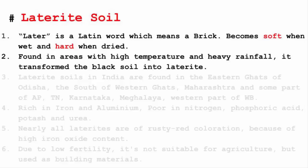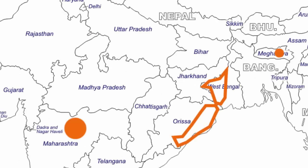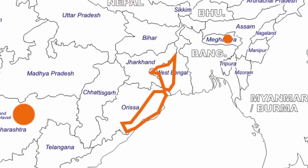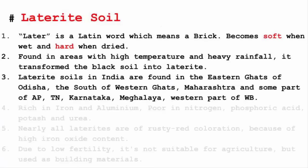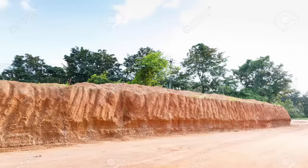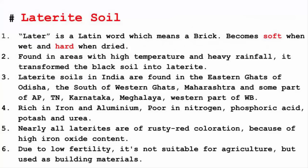By the process of leaching, black soil turns into laterite. Leaching here means loss of water. Laterite soil is mostly found in the eastern Ghats of Odisha, the south of the western Ghats, Maharashtra, some parts of Andhra Pradesh, Tamil Nadu, Karnataka, Meghalaya, and western parts of West Bengal. This soil is rich in iron and aluminium but poor in nitrogen, phosphoric acid, potash and urea. Since most of the good content is missing, it is very difficult to grow anything on it. It is not suitable for agriculture but is used as a building material — like bricks.